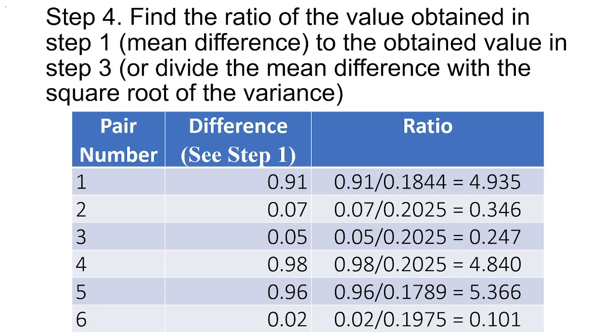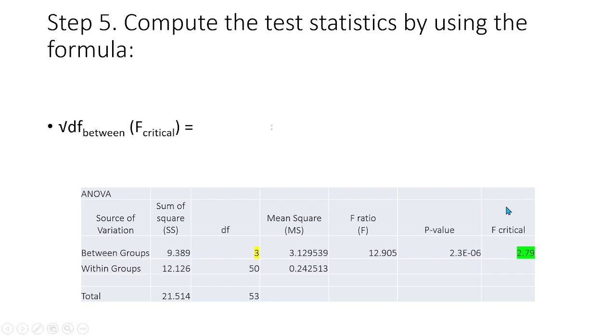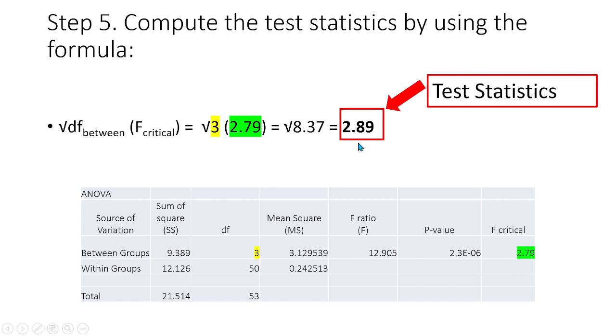Now let us proceed to step number 5. For step number 5, we are going to compute the test statistics by using the formula square root of df between times F critical. So our df between is 3, and our F critical is 2.79. So square root of 3 times 2.79, that is the square root of 8.37, equals 2.89. So this is our test statistics. What we are going to do with this is to compare this to the ratio which we obtained in step number 4.